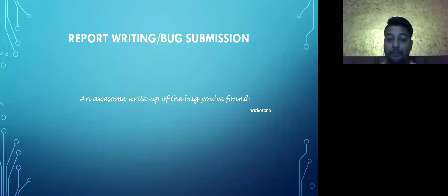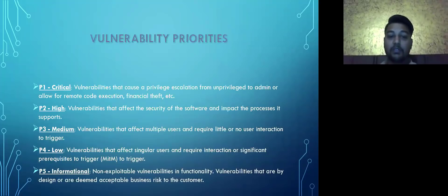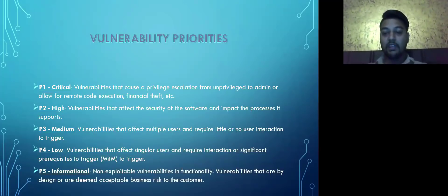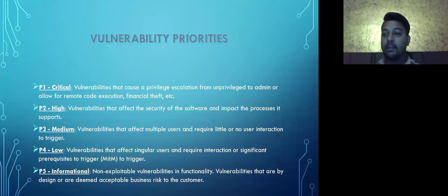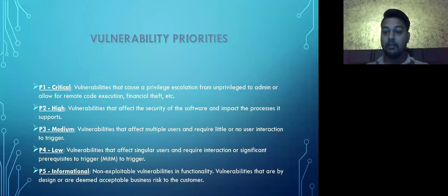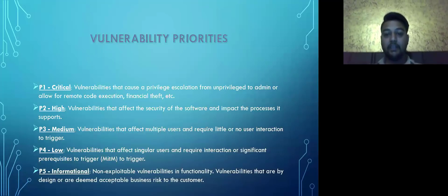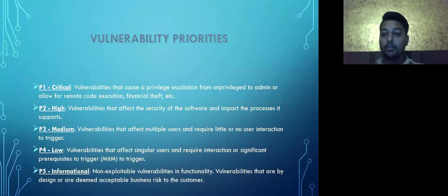Bug submissions are prioritized from P1 to P5. P5 is informational — the lowest — and you'll typically get a thank-you letter. P4 is low, P3 is medium, P2 is high, and P1 is critical. For a critical vulnerability, bounties range from approximately $500 to $10,000, depending on the website and vulnerability type.